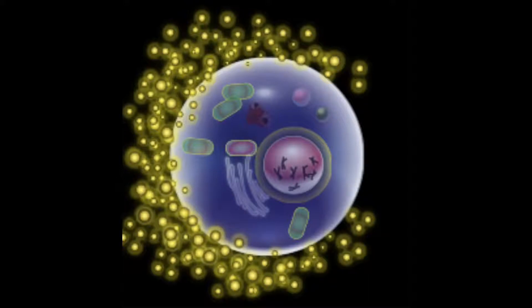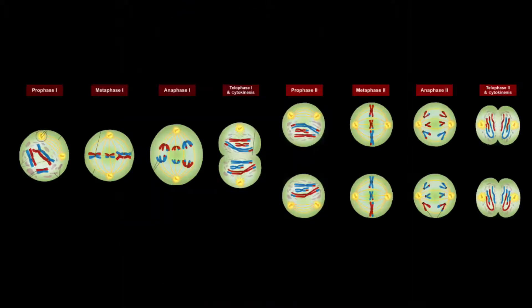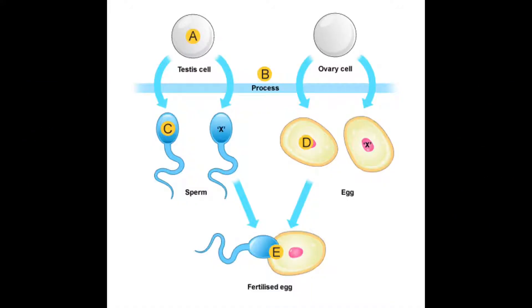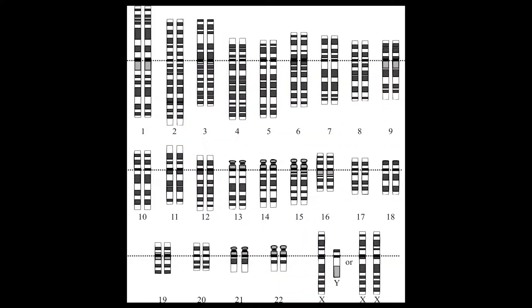Sex cells are produced by a type of cell division called meiosis. Sex cells contain only half the number of chromosomes found in body cells. Human cells have 23 pairs of chromosomes, for a total of 46 chromosomes.